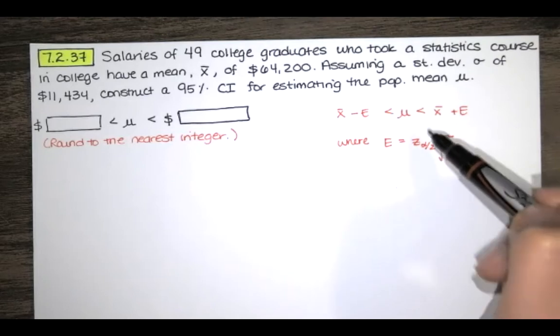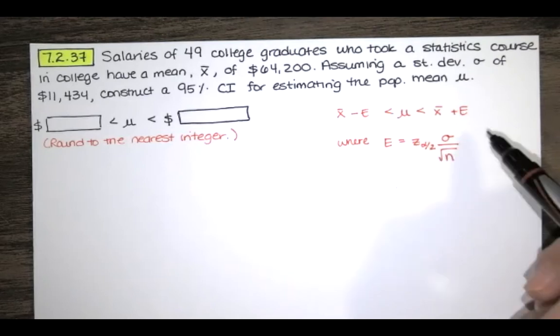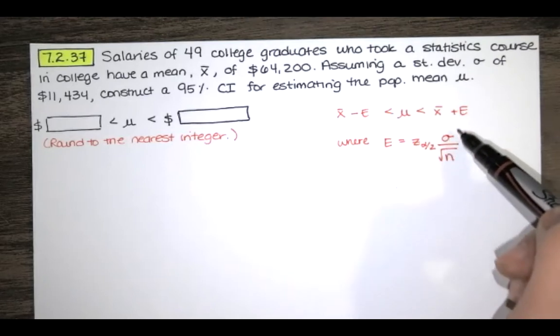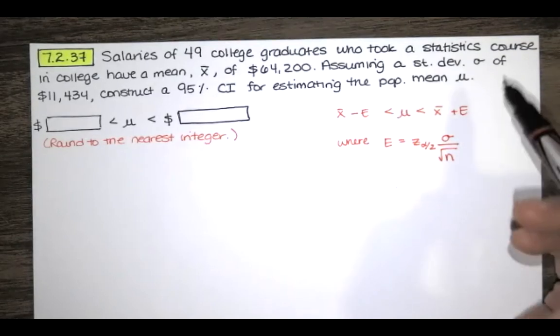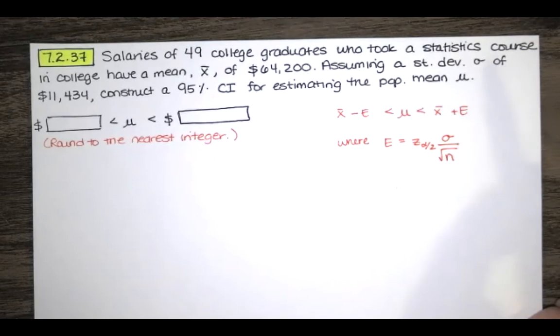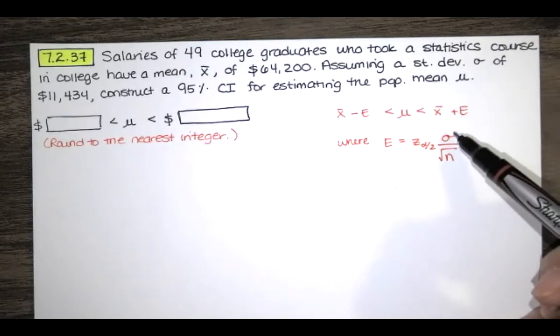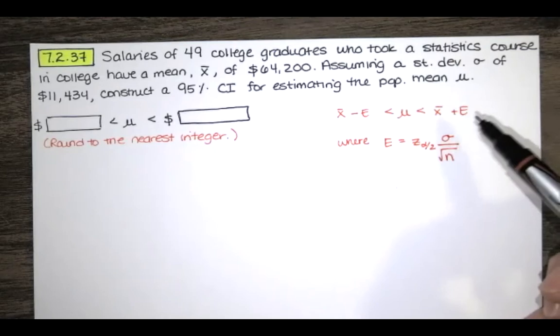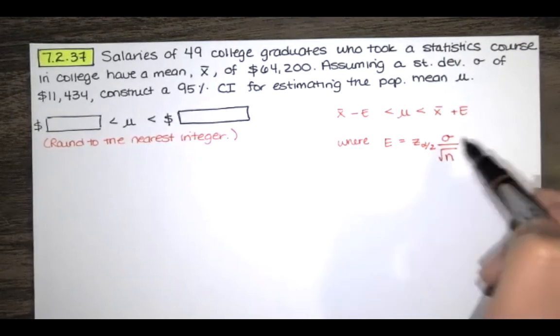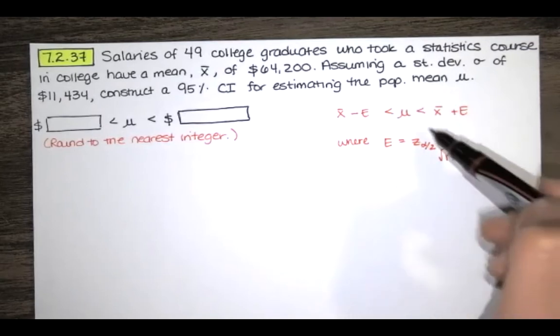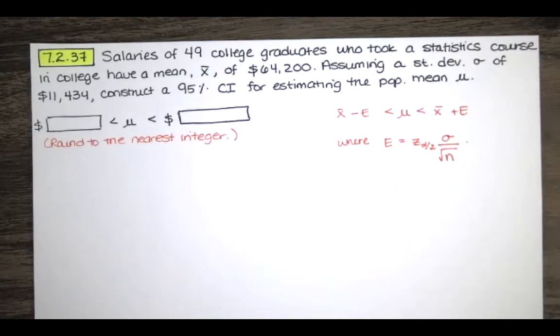So here we're using our standard normal distribution to find the critical value and the population standard deviation. In the other case, we use the sample standard deviation and the critical T value as opposed to the Z value. This time, whenever this is the case, we don't need degrees of freedom because we're just going to use standard normal distribution.